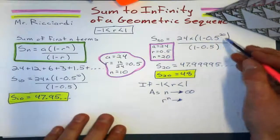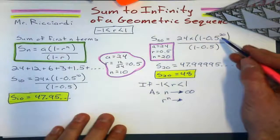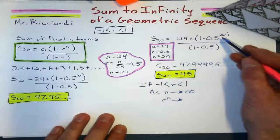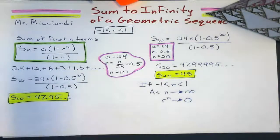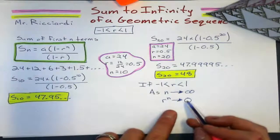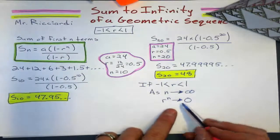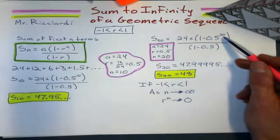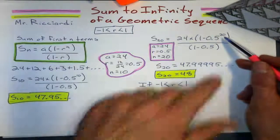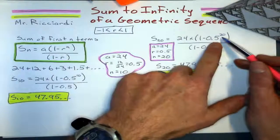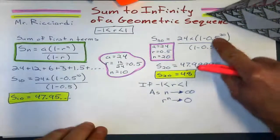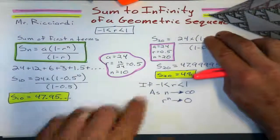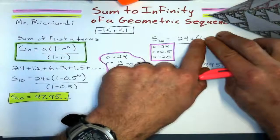So 0.5 to the 20th, if we do this on the calculator, it's basically going to be 0. Now, that's an important concept to understand, because if N is getting really really really big, meaning approaching infinity, and this is getting closer and closer to 0, well, this basically turns to 0, this bit right there. That turns to 0, which means that turns to 1.